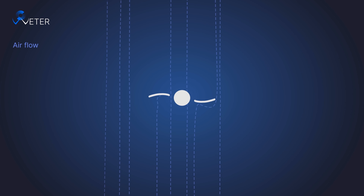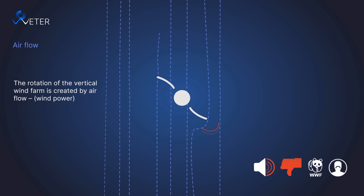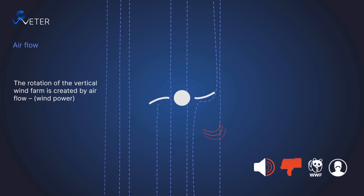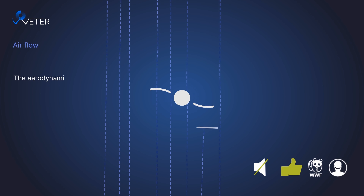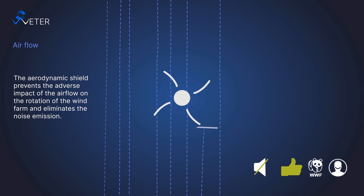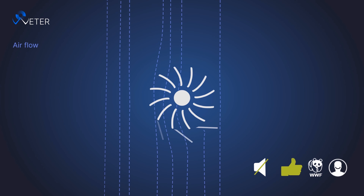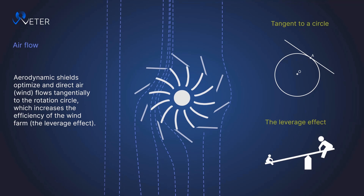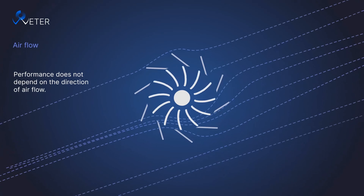Airflow. The rotation of the vertical wind farm is created by airflow wind power. The aerodynamic shield prevents the adverse impact of the airflow on the rotation of the wind farm and eliminates the noise emission. The aerodynamic shield optimizes and directs air wind flows tangentially to the rotation circle, which increases the efficiency of the wind farm and the leverage effect. Performance doesn't depend on the direction of airflow.